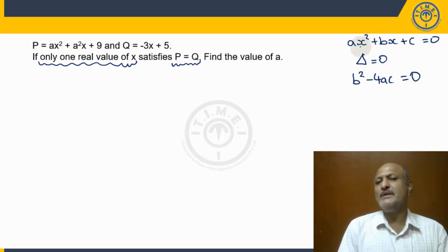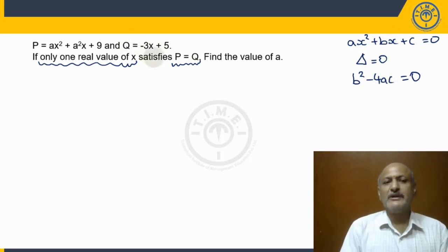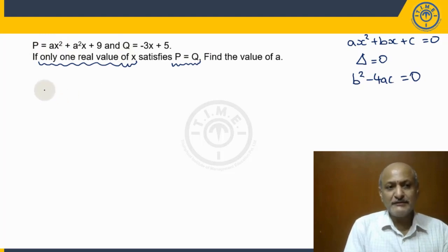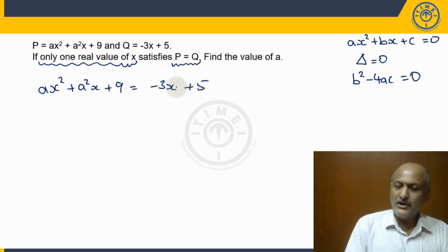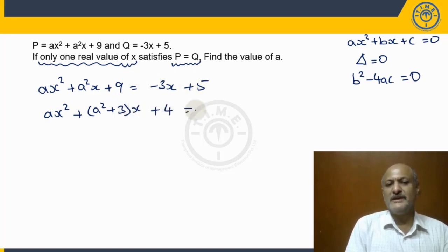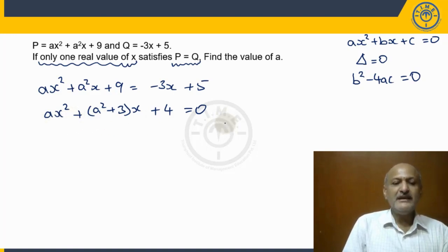Here, a, b, and c are the coefficients of x², x, and the constant term. Now this is the condition we are looking for. Let us rewrite the quadratic equation by considering p = q. If we equate p with q, we get: ax² + a²x + 9 = -3x + 5. Bringing all terms to one side: ax² + (a² + 3)x + 4 = 0. For this equation, the roots of x must be real and equal, so the discriminant must equal 0.